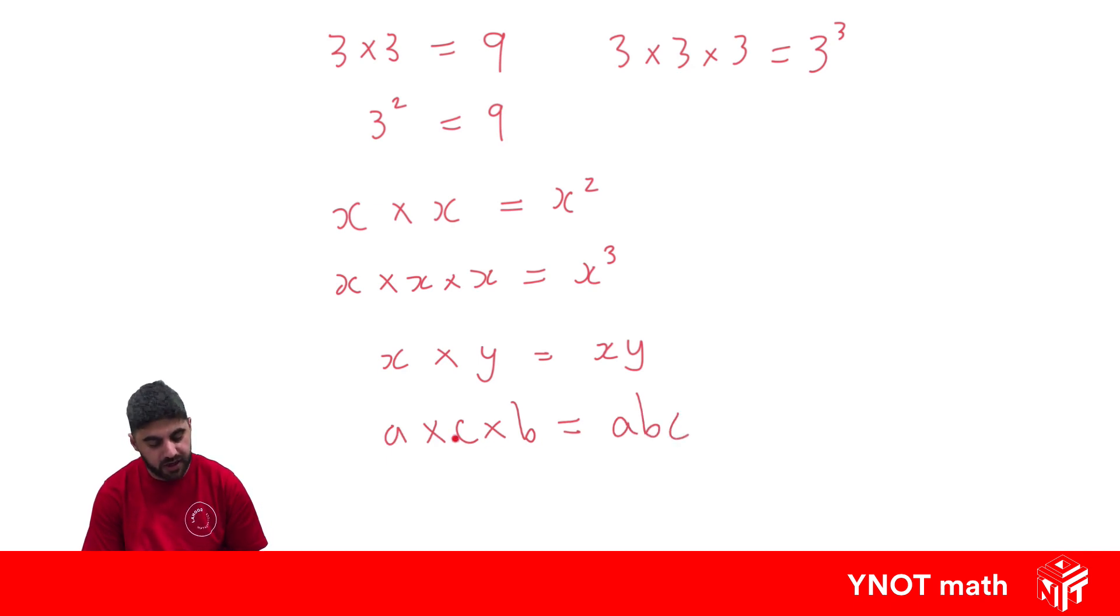So a times c times b is abc. Multiplying different terms together, we can just write next to each other, but usually in alphabetical order. That's why I wrote abc instead of acb. acb would also be correct, but we just like writing it in alphabetical order.